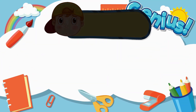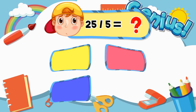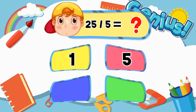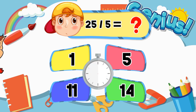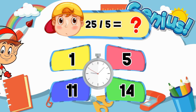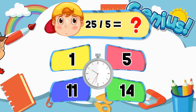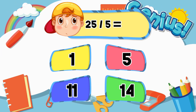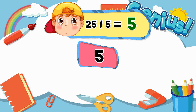What is 25 divided by 5? Options: 1, 5, 11, 14. The answer is 5.